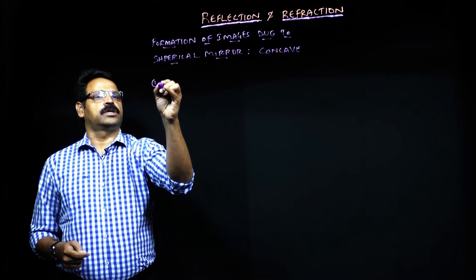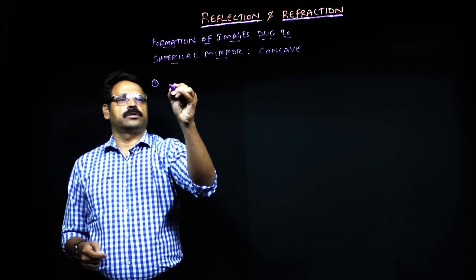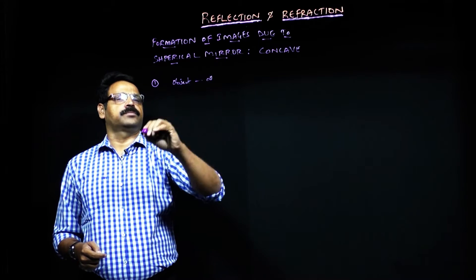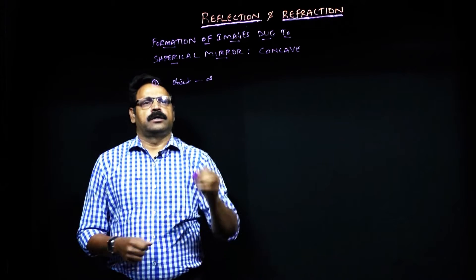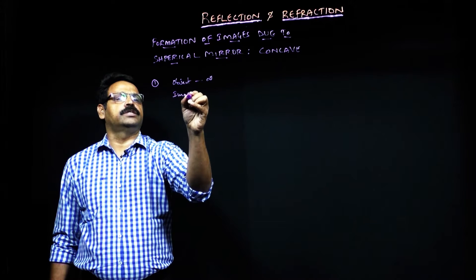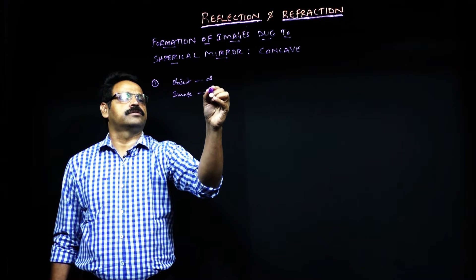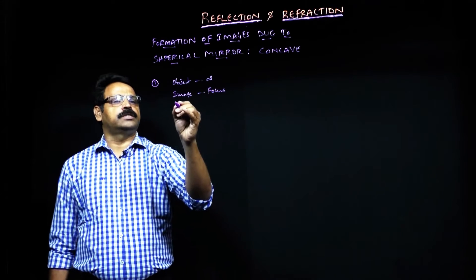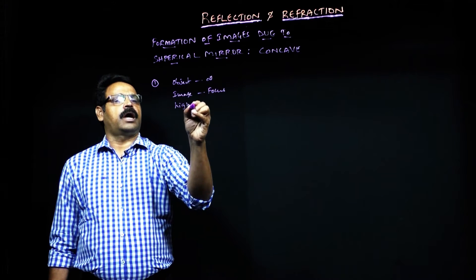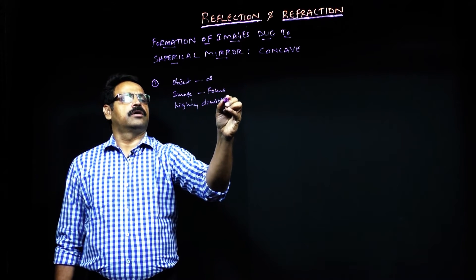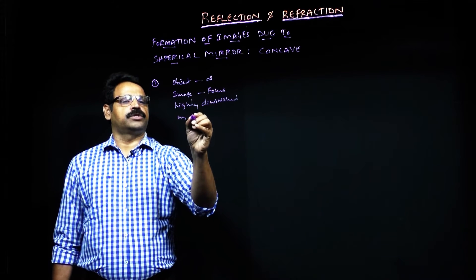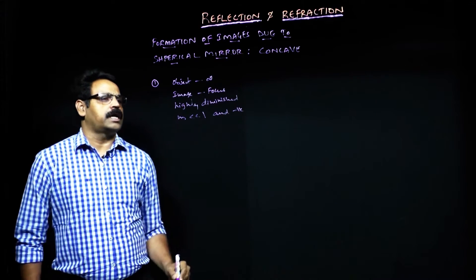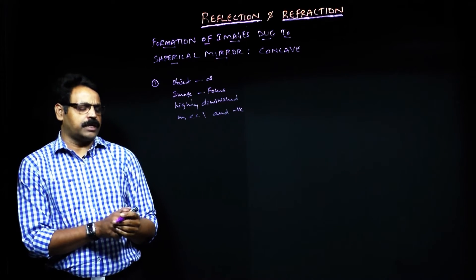The very first thing is the object position: object is at infinity. When the object is at infinity, the image is formed at focus. The nature of the image is highly diminished, and the magnification is going to be very less than 1 and negative. We will look at how it can be calculated and seen pictorially.